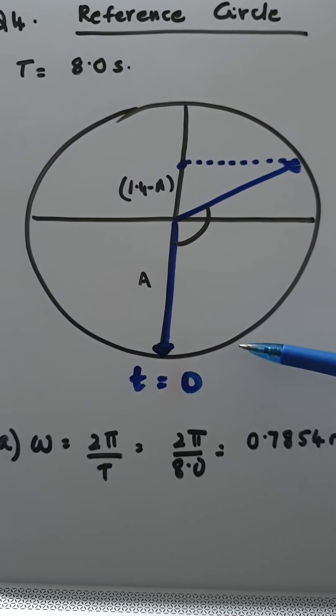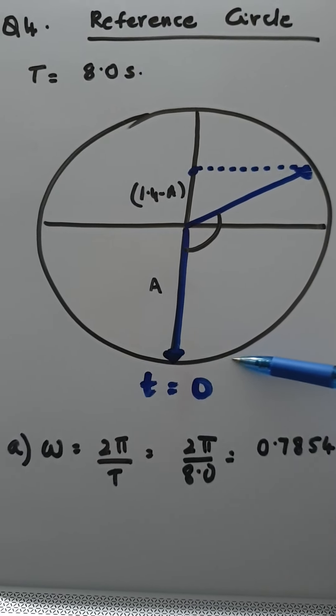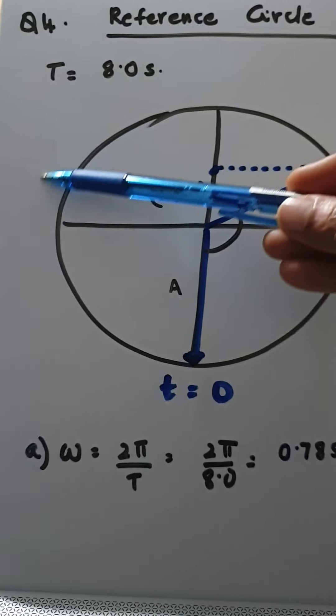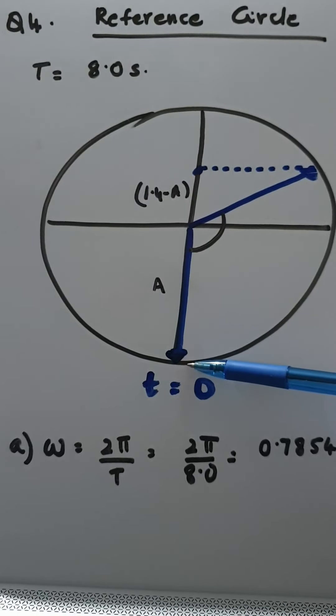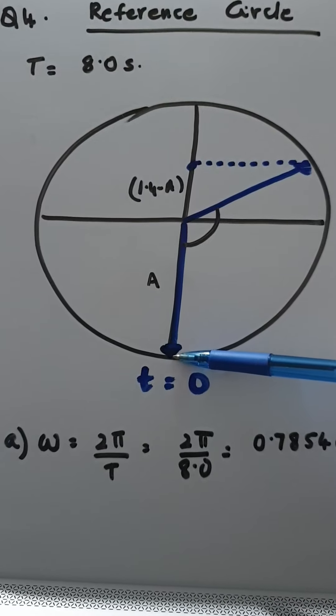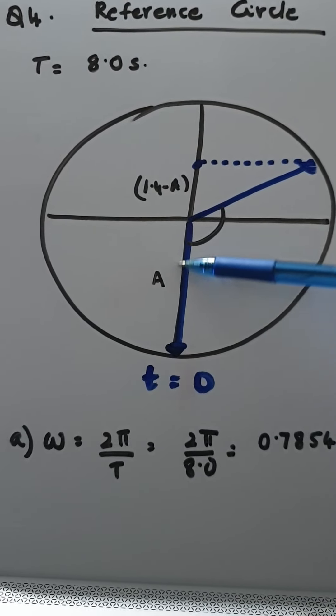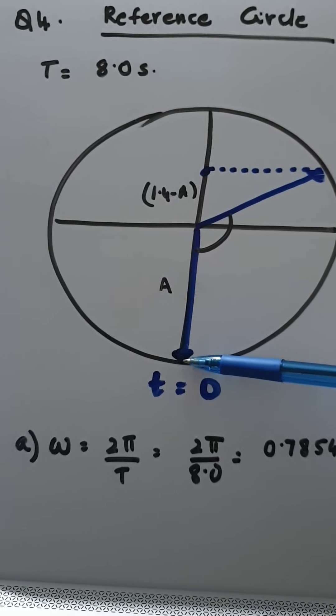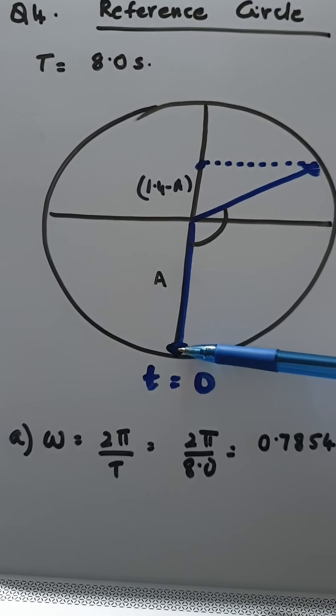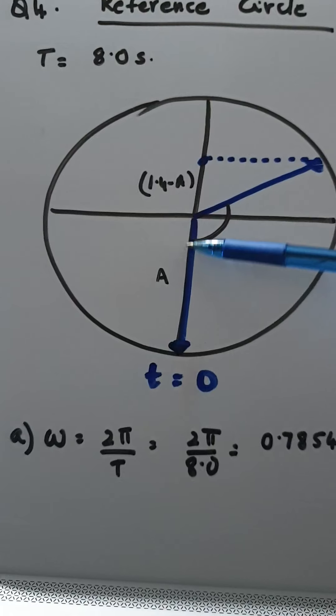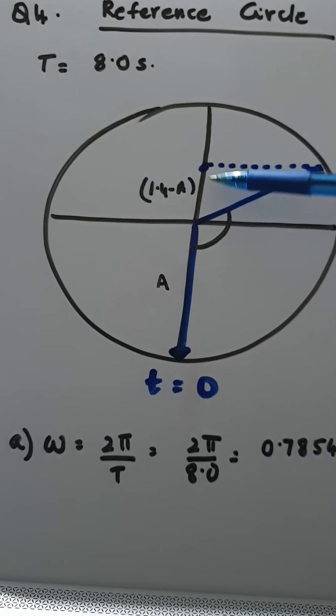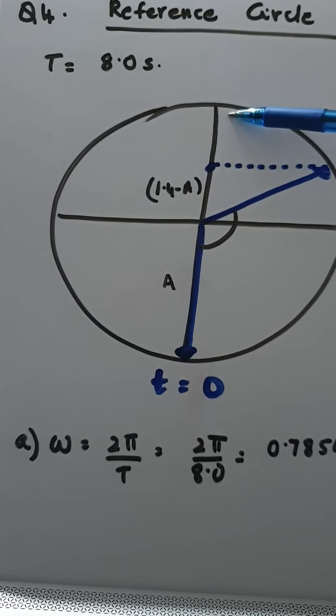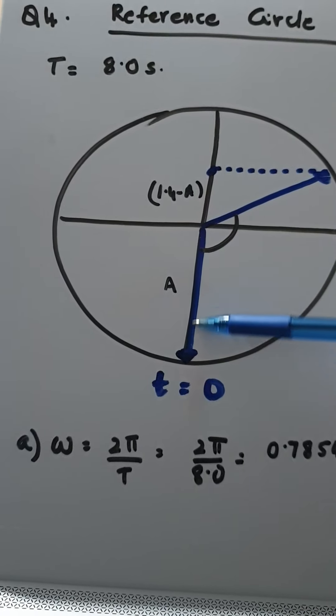So what does that mean? So it takes for the reference particle, it takes 8 seconds to do the whole circle. In that 8 seconds the simple harmonic motion particle has gone from the bottom all the way to the top and all the way back. Now let's divide this into 4 parts. So it's going to take 2 seconds to reach till here, another 2 seconds to go till there, 2 seconds back, and 2 seconds.